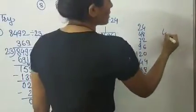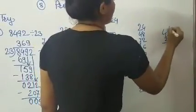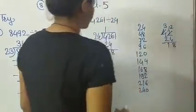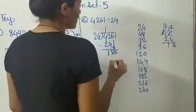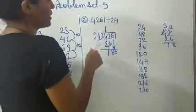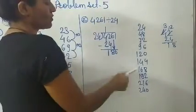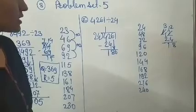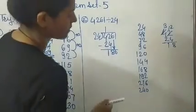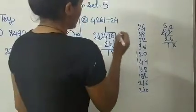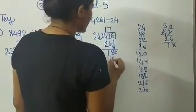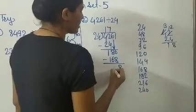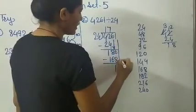If you can't do it orally, then solve this separately. Now what is the next number? 6. So take that 6 down. In the table of 24, is 186 there? No. So 168 is smaller than 186. So 7 times 24 is 168. Now subtract: 16 minus 8 is 8, and 7 minus 6 is 1. Now 1 is there — take that 1 down.